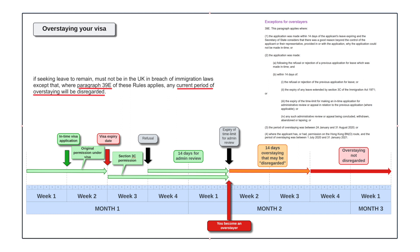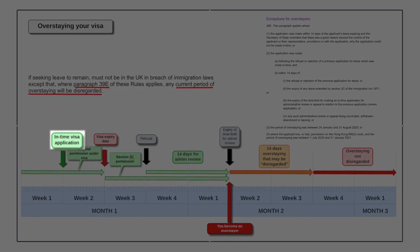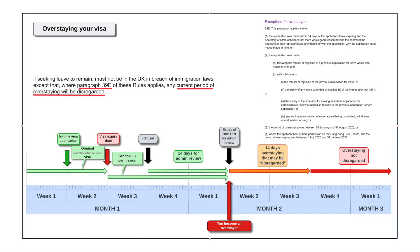So on this diagram, this is a typical scenario that I come across. There is an in-time application for a visa. So you're in the UK, you make an application to extend your visa, and that application is made in time — in other words, before the expiry of your current visa. So then there's a period before your original visa expires.